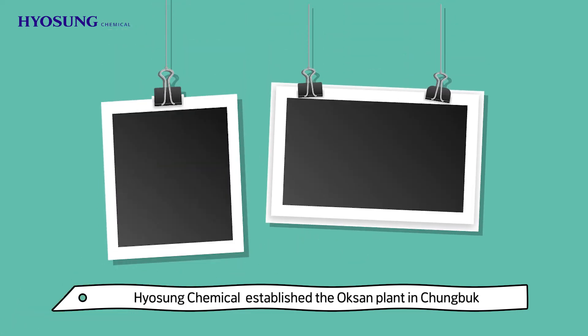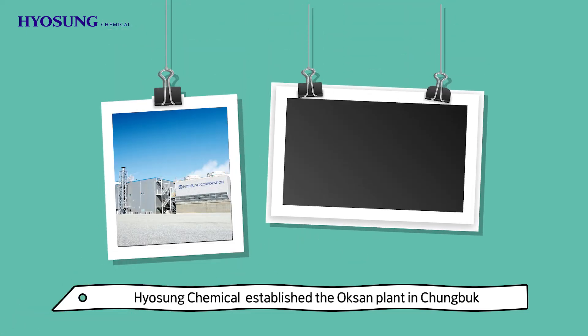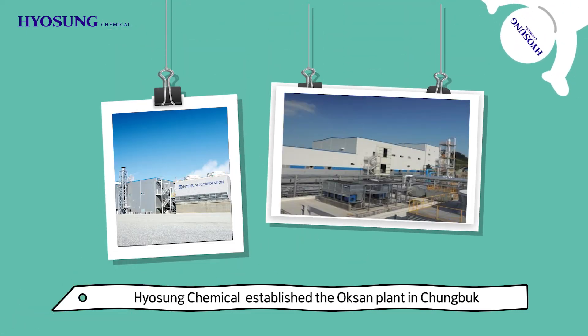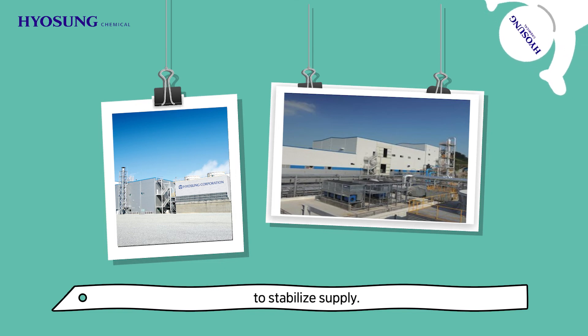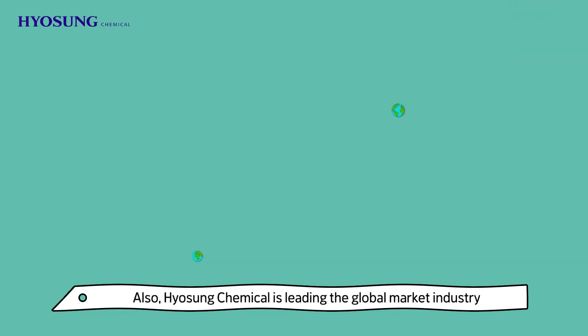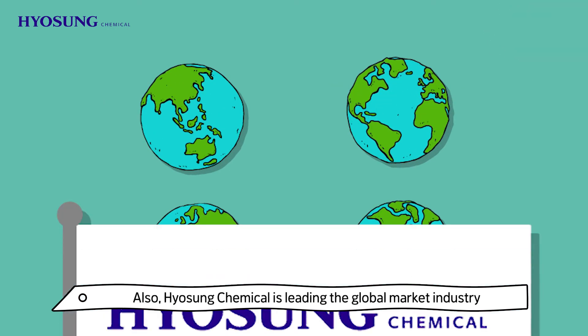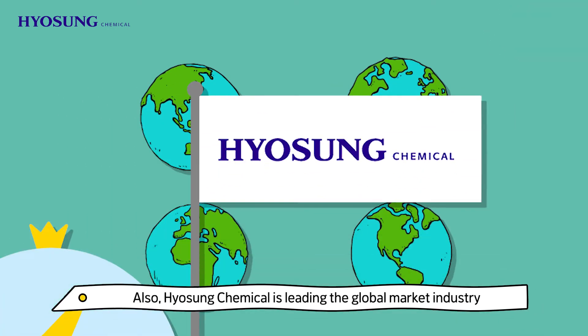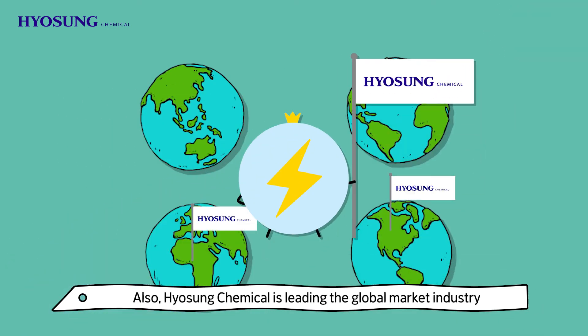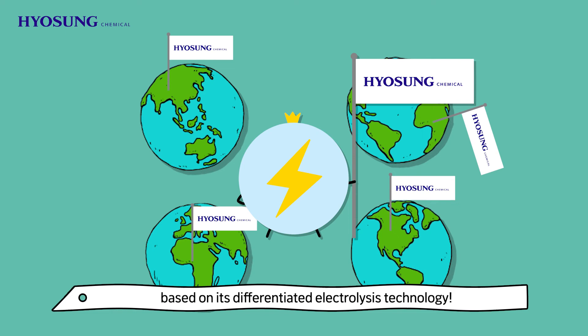In response to the increase in global demand, Hyosung Chemical established the Oksan plant in Chungbuk to stabilize supply. Hyosung Chemical is leading the global market industry based on its differentiated electrolysis technology.